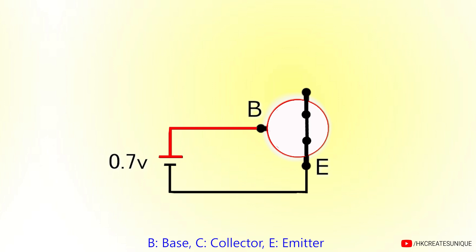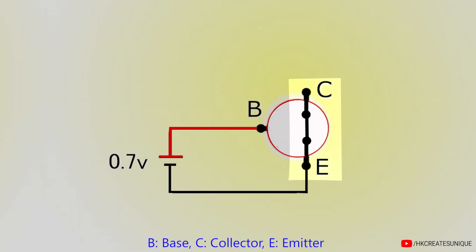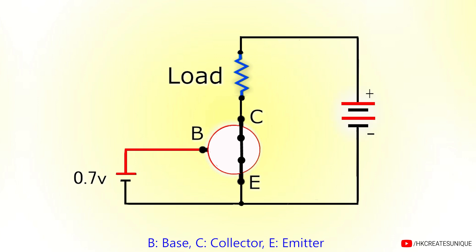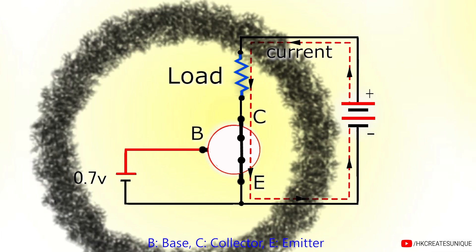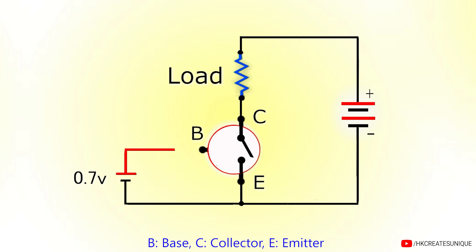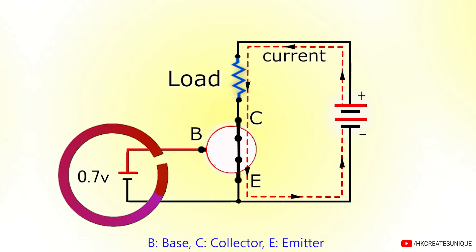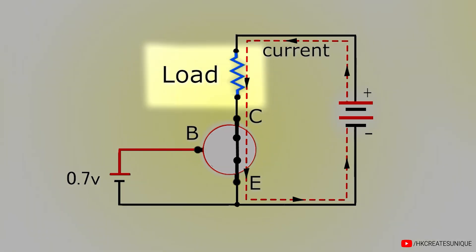When a load is connected, the current through it can be controlled by using base voltage. Instead of using an additional voltage source for the base-to-emitter voltage, you can use the same voltage source that powers the load.